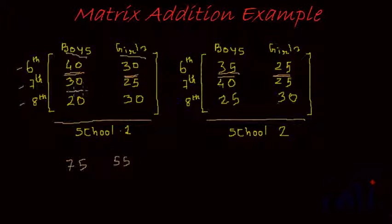Boys in class 7 in school 1, boys in class 7 in school 2, add them up together, it gives 30 plus 40, which is 70. Boys in class 8 in school 1, boys in class 8 in school 2, add them up together, you get 45.